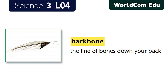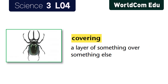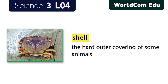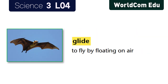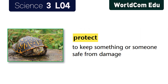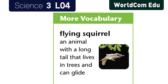Lesson 4: Animals With and Without Backbones. Vocabulary review — backbone: the line of bones down your back. Covering: a layer of something over something else. Shell: the hard outer covering of some animals. Hop: to make small jumps. Glide: to fly by floating on air. Protect: to keep something or someone safe from damage. Flying squirrel: an animal with a long tail that lives in trees and can glide.